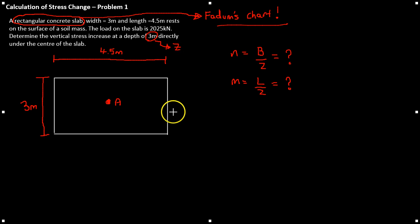If you remember in the tutorial I gave on calculation of stress change with FADM's chart, I said that the point of interest needs to be at the corner of a rectangle. So in this scenario we need to divide the slab into 4 equal rectangles so that the point of interest is on a corner of each of those rectangles.